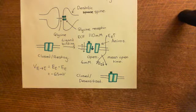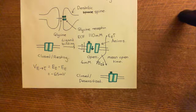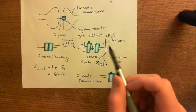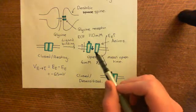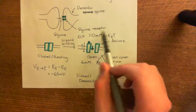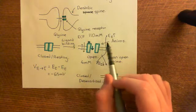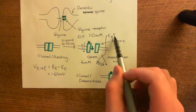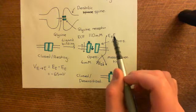We have opened the glycine receptor, and that is allowing chloride anions into the cell. The chloride anions are coming from the extracellular fluid. When we move them out of the extracellular fluid, that's going to raise the electrical potential of the extracellular fluid.